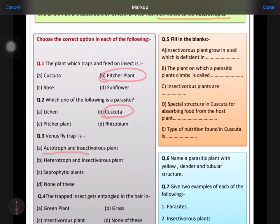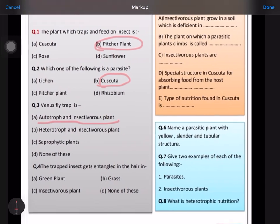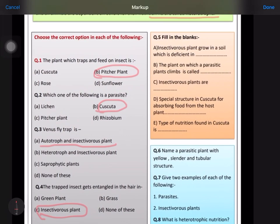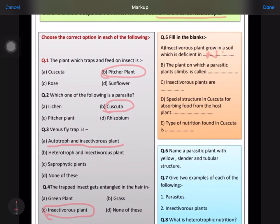The trapped insect gets entangled in the hair of insectivorous plants. Insectivorous plants grow in soil which is deficient in nitrogen. The plant on which a parasite plant climbs is known as host.